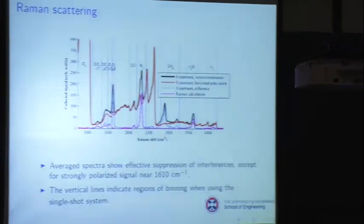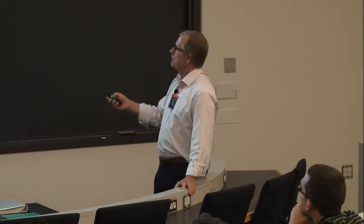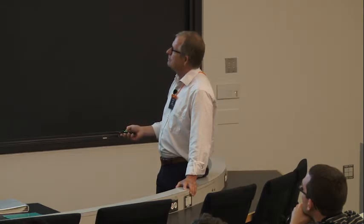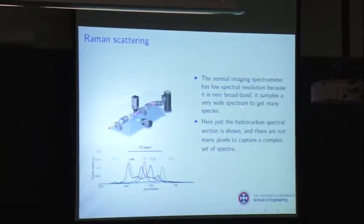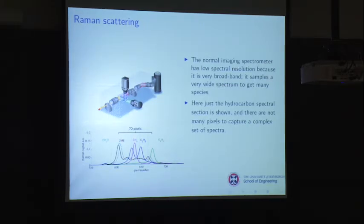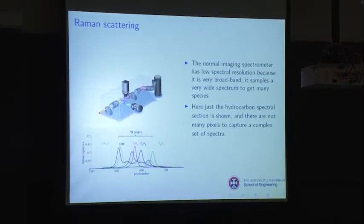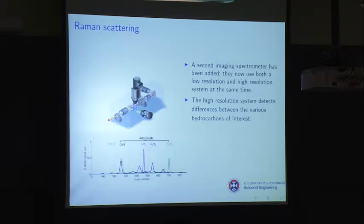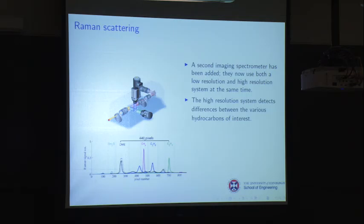Their normal spectrometer has fairly low spectral resolution. Here's a hydrocarbon spectrum in that spectrometer showing DME, methane, ethane, and others all mixed together. They made a second imaging spectrometer with much better resolution just for that CH region, and now you're seeing extremely nice-looking spectra all separated out so they can bin those different components and see their contribution as well. So they basically have three spectrometer systems all running at the same time, single-shot each time, capturing these spectra.